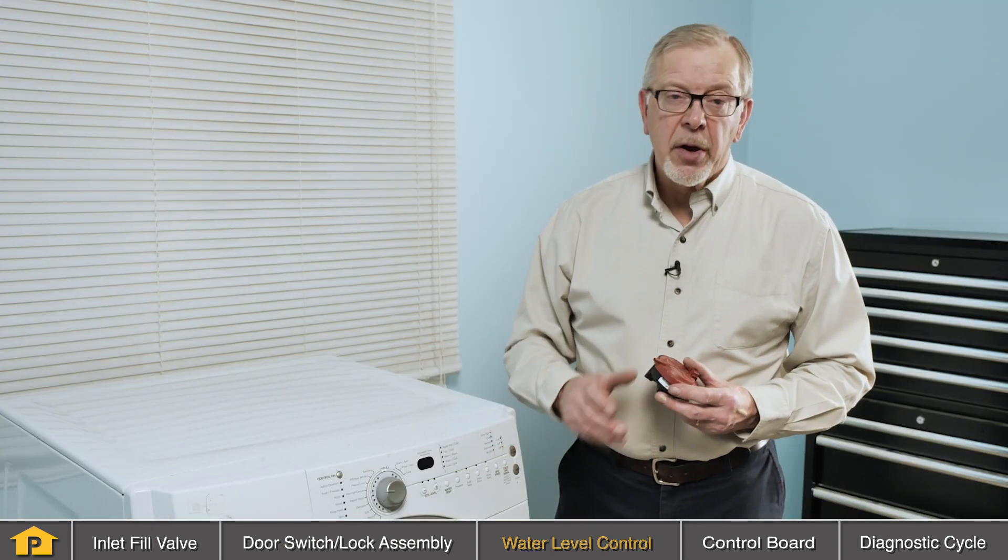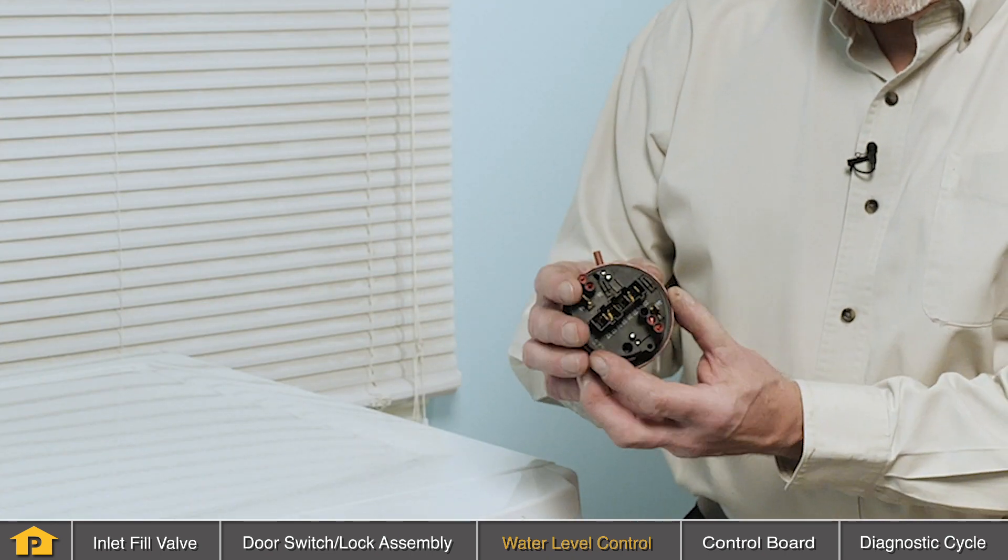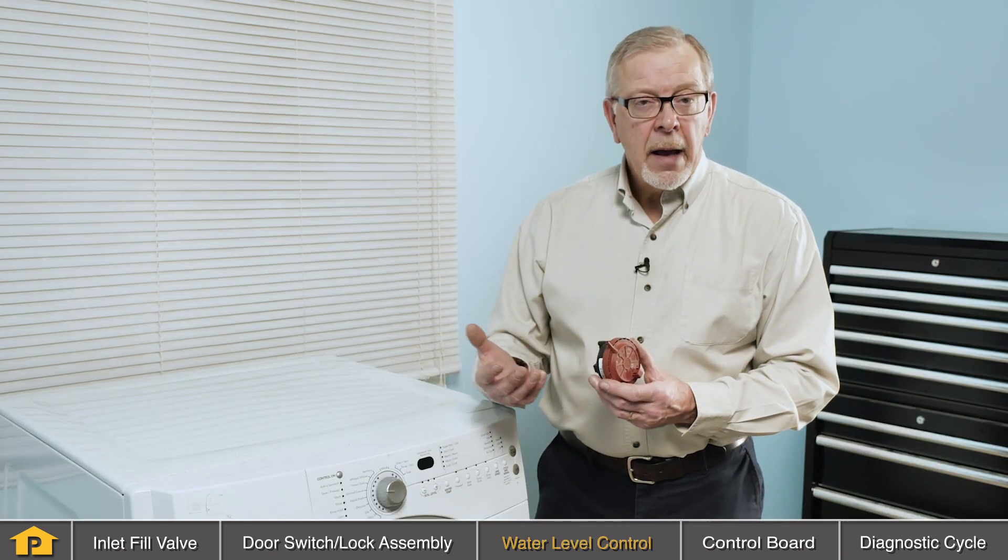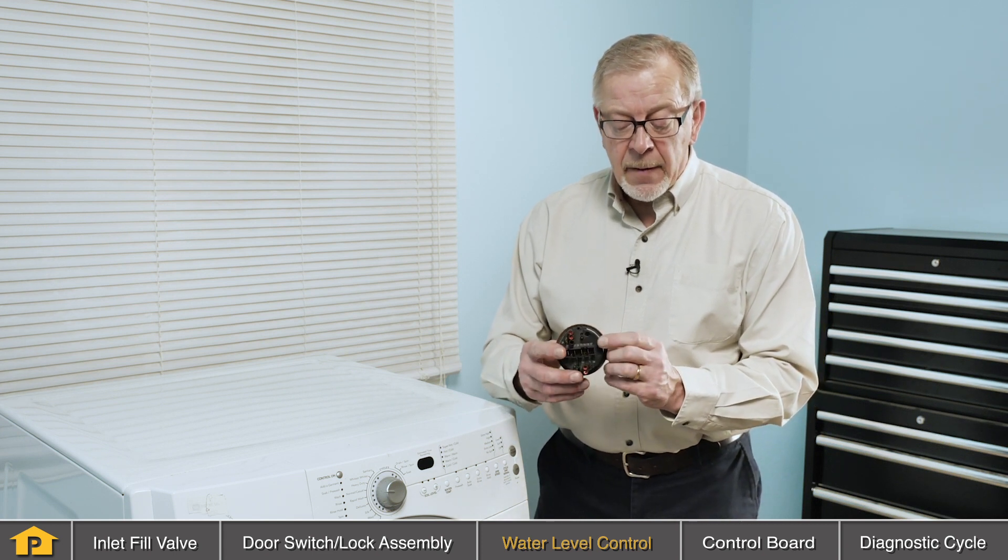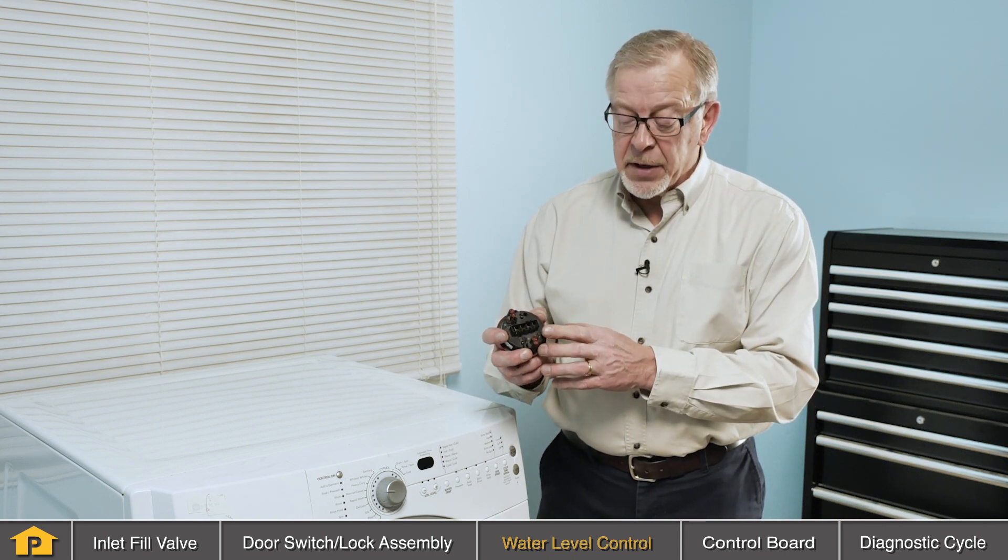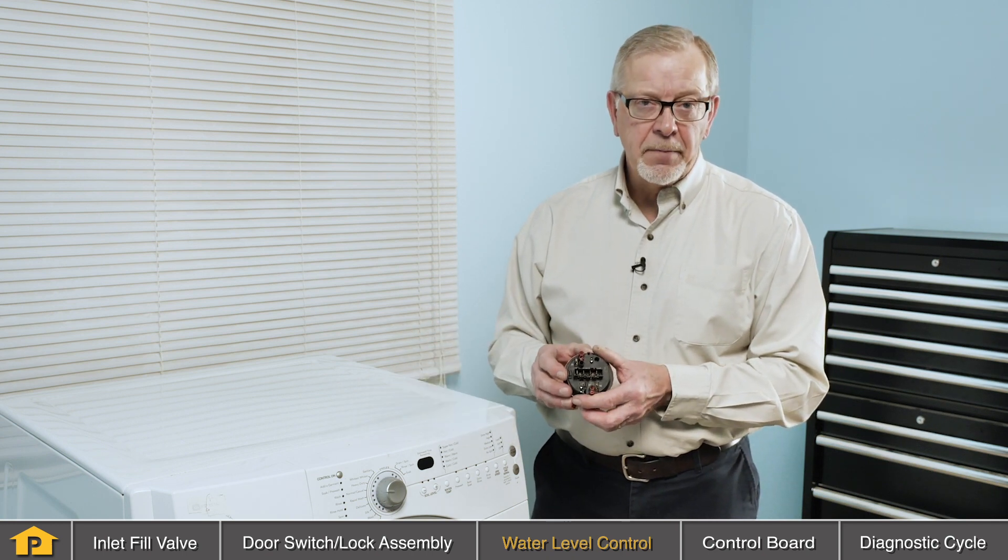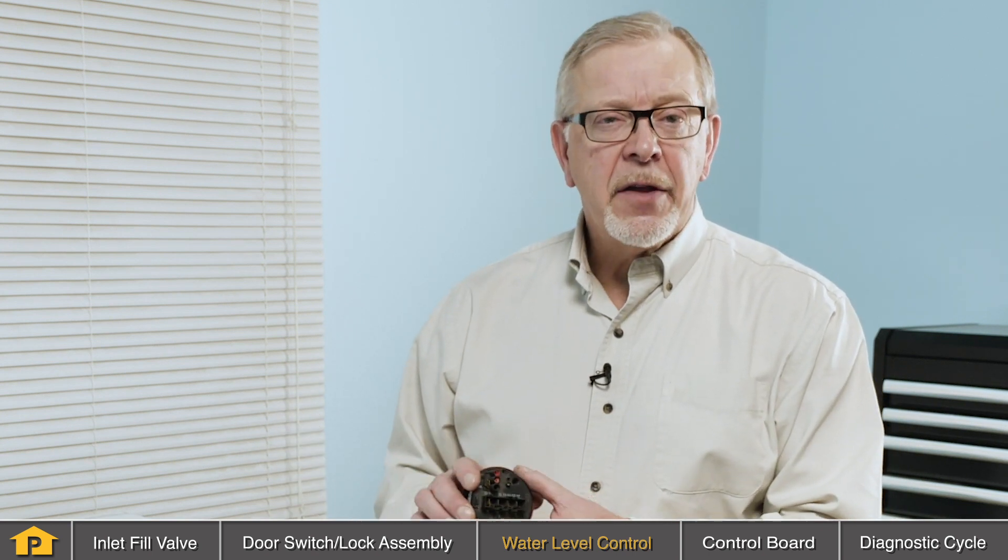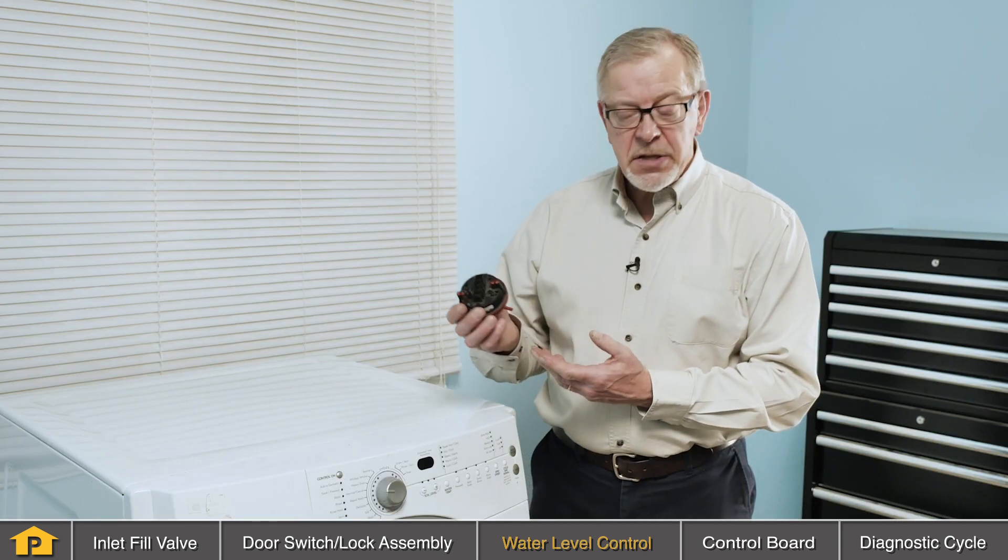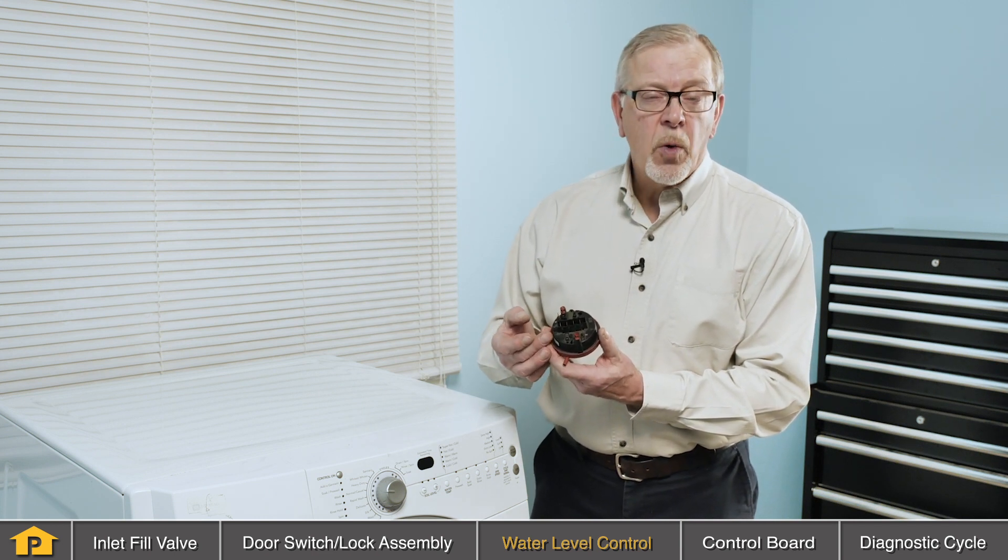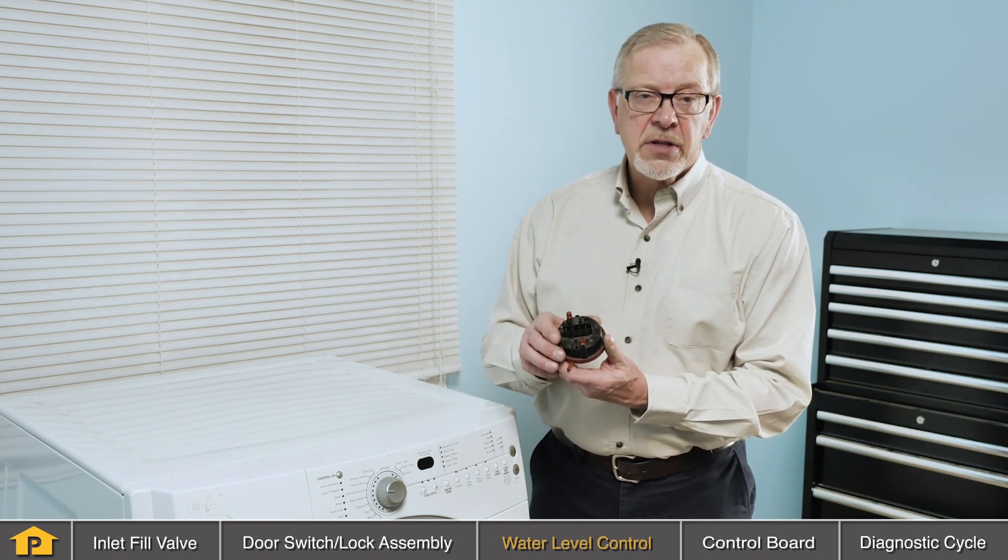All front load washers use a water level control or a pressure switch to guarantee that we have the proper amount of water in our washer. Typically that switch is mounted inside of the cabinet. We'll have a hose attached to it that runs down to the bottom of the outer tub so that it can allow air pressure to build up inside of that housing which operates a diaphragm and closes switch contacts. Typically the switch contacts are in a closed position allowing the inlet fill valves to turn on. If the water level control is defective, switch contacts may not be making proper contact and therefore not allowing power to our inlet fill valve. It is easy to test the water level control using a multimeter to check for continuity on those switch contacts but you also need the wiring diagram for your model to determine which of the contacts we need to test.